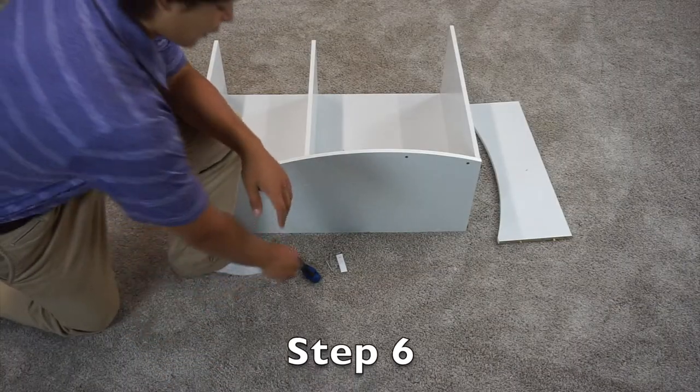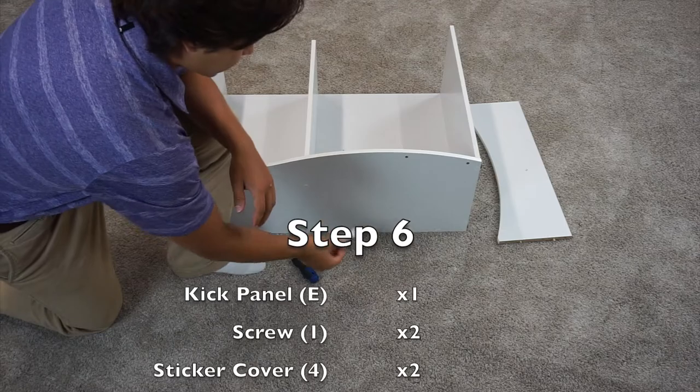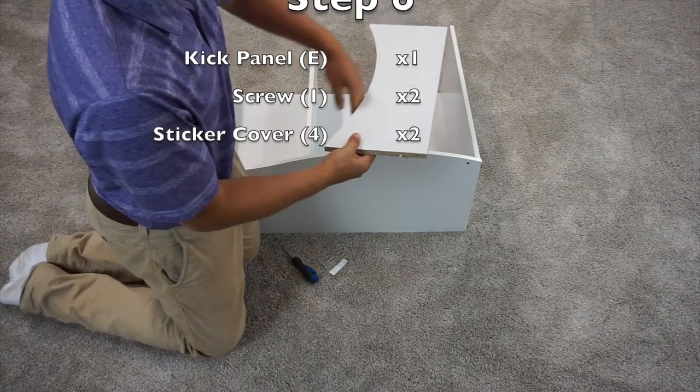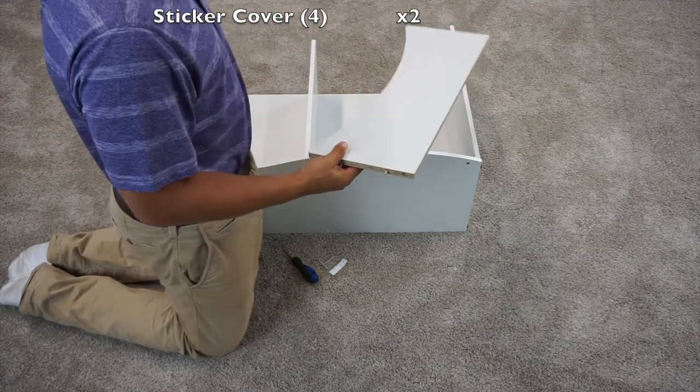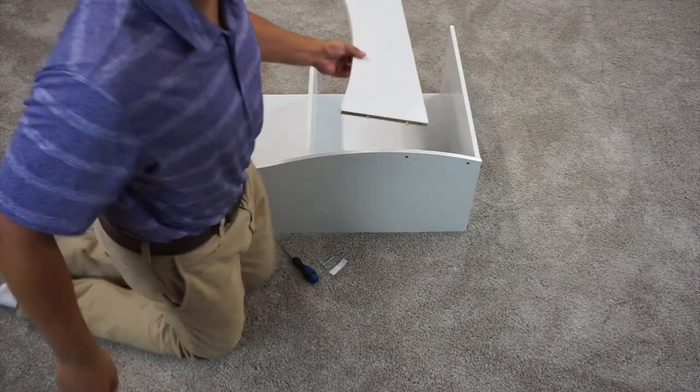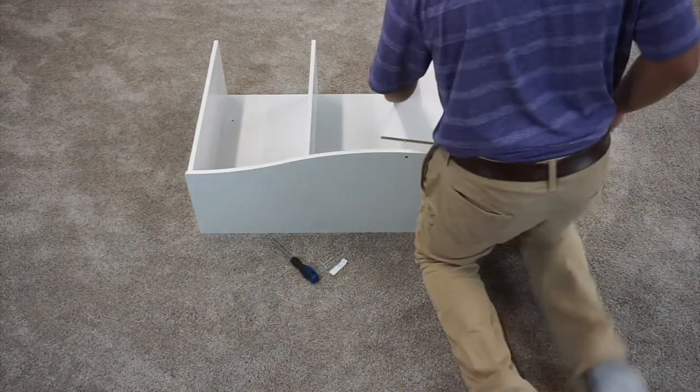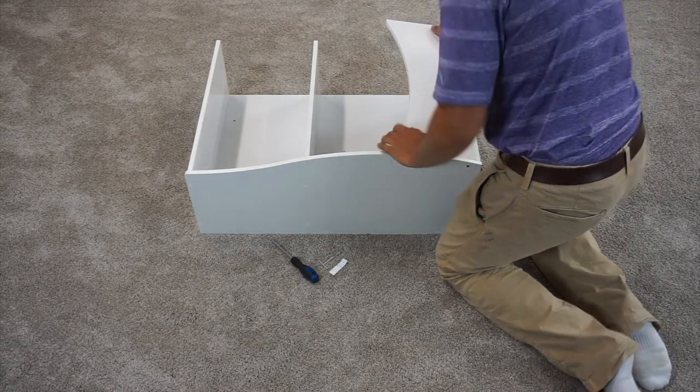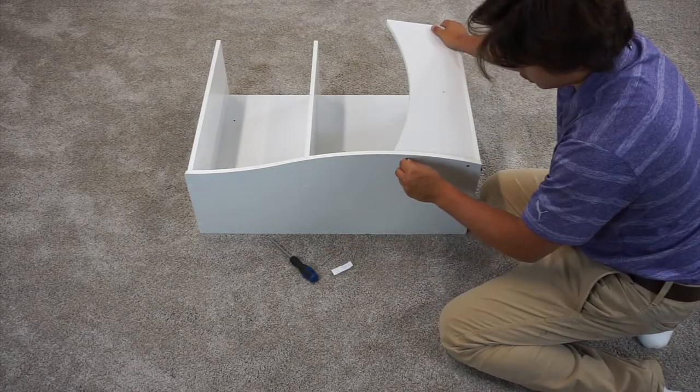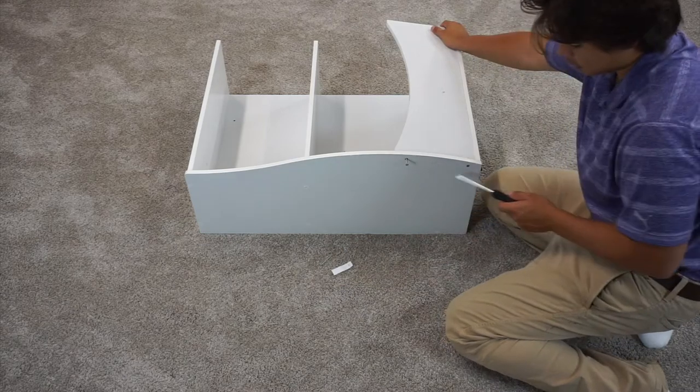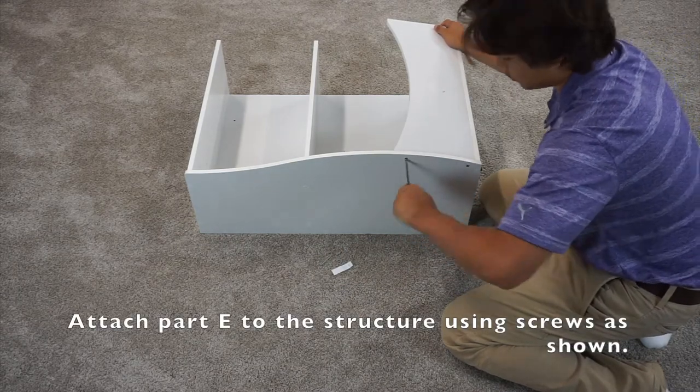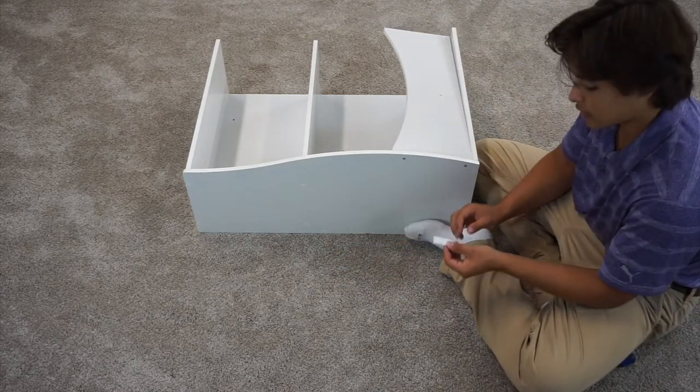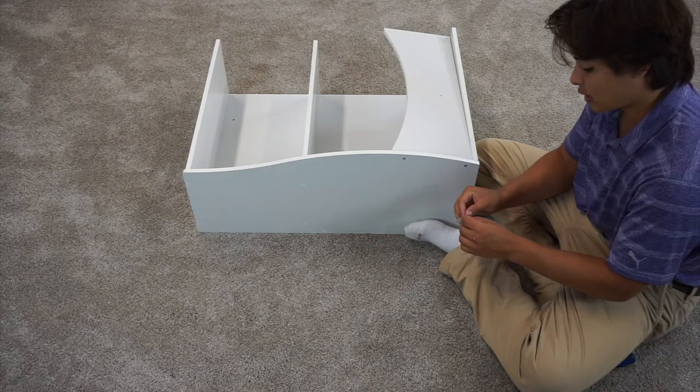For step six you're going to want to have two screws and two cover stickers and then your E panel. Align your E panel so that the curved piece is facing towards these two A panels. And then you'll want to screw it in with these two holes here and here. Then you'll want to take your two cover stickers and cover up the screw heads.